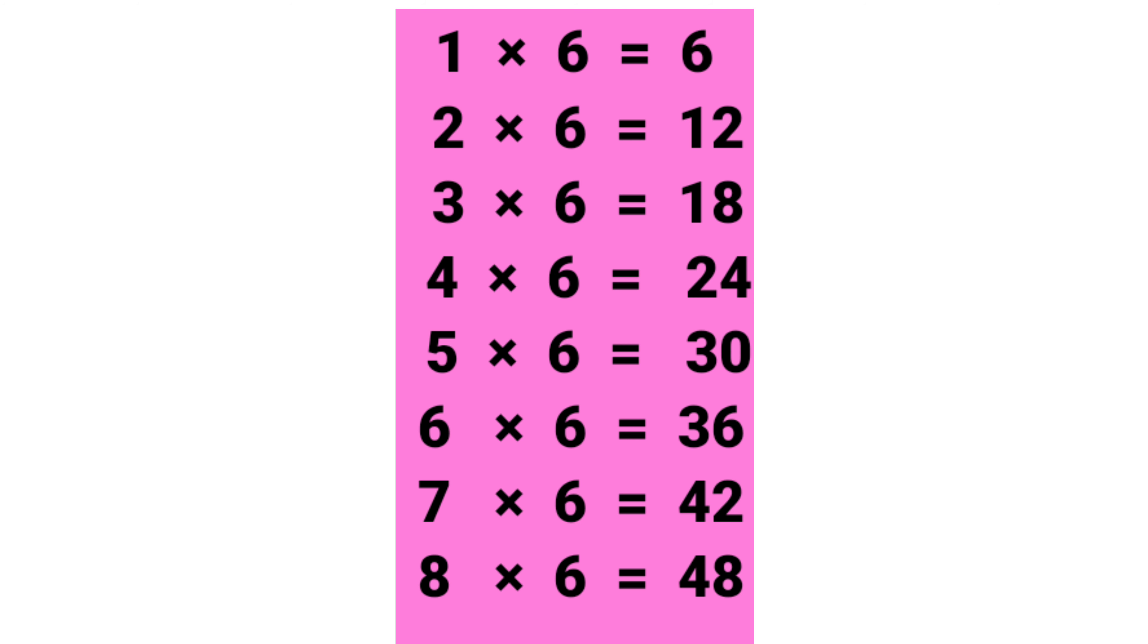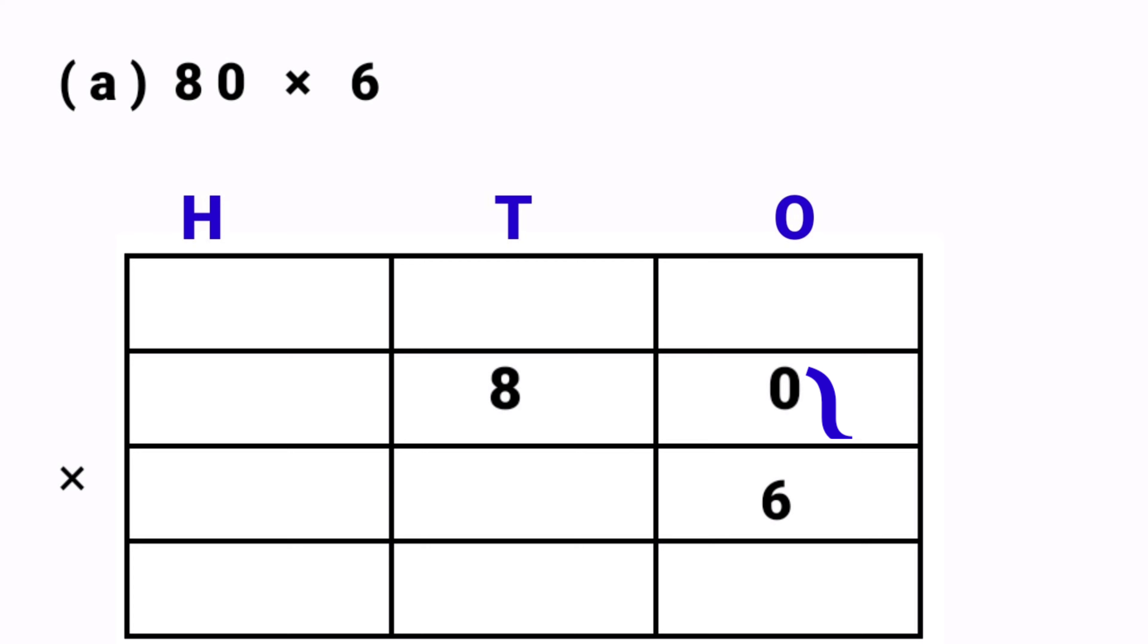First we have to multiply from 1's place: 0 into 6. So the answer is 0. Any number multiplied with 0, the answer is 0. And move to the next number, 8 multiplied by 6. So 8 6 are 48. So the answer is 80 cross 6 is equal to 480. So 480 is a product.